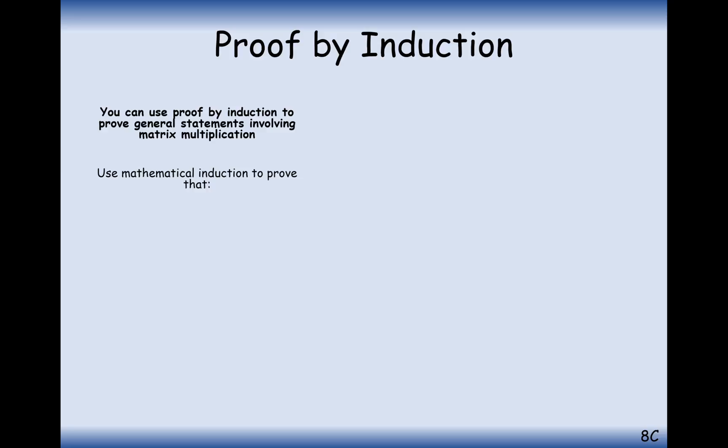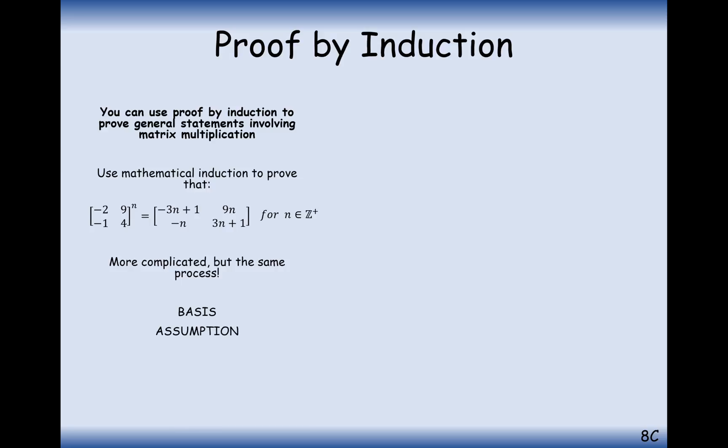That's how we do it. Let's have a go at a more difficult one now. The matrix (−2, 9; −1, 4) to the power of n can be simplified to (−3n+1, 9n; −n, 3n+1) for n in the positive integers. It will be more complicated — each cell will have to have some manipulation done to it — but it's still the same structure.